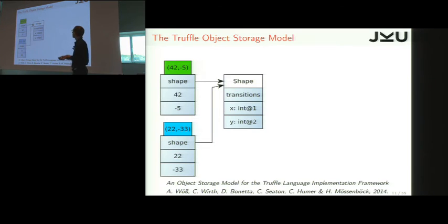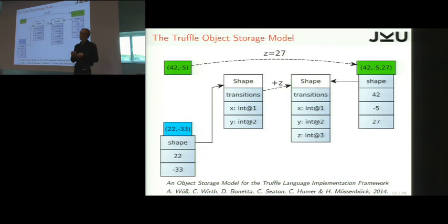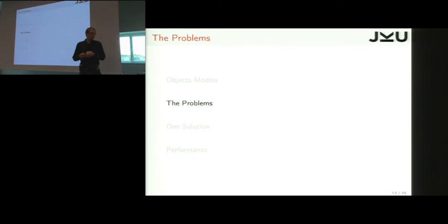Now, if we add a Z field to make it a three-dimensional point, like here, then we will update the shape to a shape that says that Z is at location three and it's there. Now, this is all right, but it doesn't work very well when we are using shared memory multithreading.